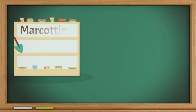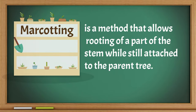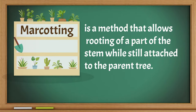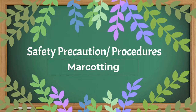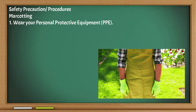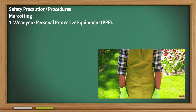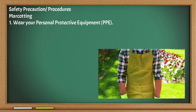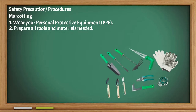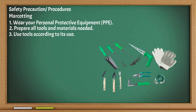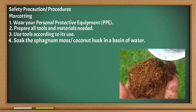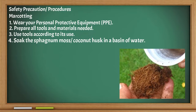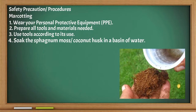Marcotting. Marcotting is a method that allows rooting of a plant stem while still attached to the parent tree. Wear your personal protective equipment or PPE. Prepare all tools and materials needed. Use tools according to their use. Soak the sphagnum moss or coconut husk in a basin of water.